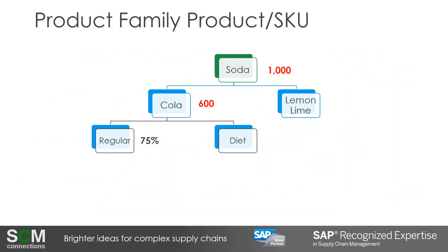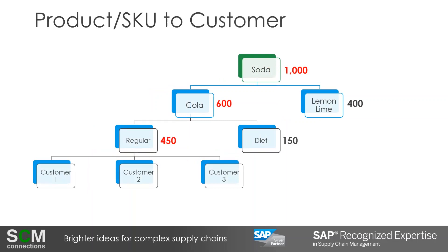Perhaps regular will represent 75% of sales, and diet will get the remaining 25%. So I'll forecast regular Cola sales to be 450 units and diet to be 150 units. Finally, I can take my regular Cola forecast of 450 units and split it among my three customers evenly at 33% apiece. Therefore, each customer will forecast for 150 units of regular Cola.